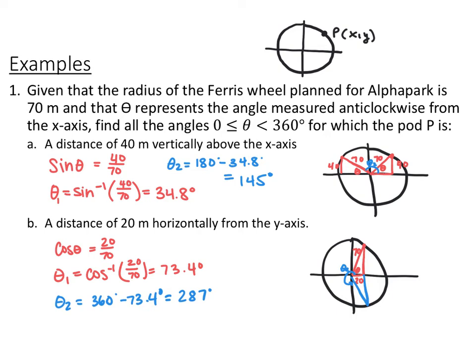Again, the other way you could have done this is gone into y equals, set y1 equal to cosine of theta, y2 equal to 20 over 70, and then find where they intersect.